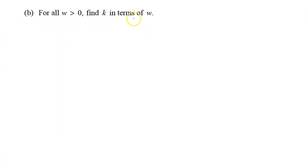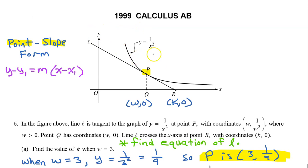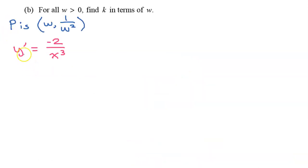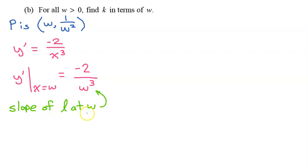Part B says find k in terms of w, so we do the same thing but with more variables. If point P has x value of w, then the y value is 1 over w squared. From Part A, y prime equals negative 2 over x cubed, so at x equals w, the slope is negative 2 over w cubed. Now we have a point and slope to write the equation of line L.